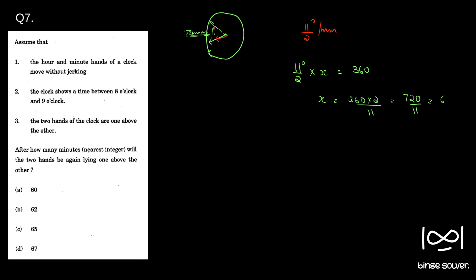720 divided by 11 gives approximately 65.4, so we get the answer as C — 65 minutes is the time it takes for the hands to overlap again. We can quickly find the answer if we know this concept. People who are familiar with using relative speed in clock questions can skip to the next question.